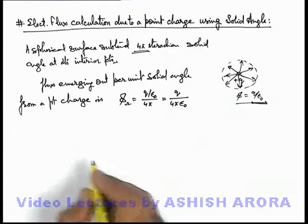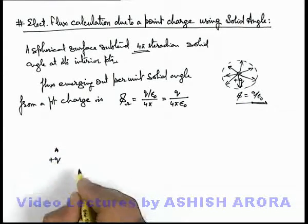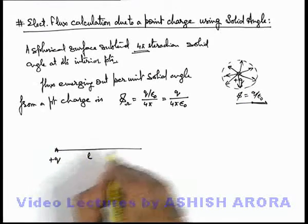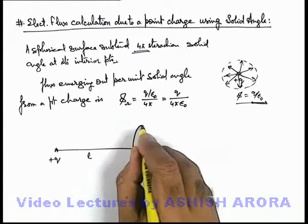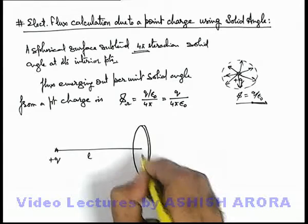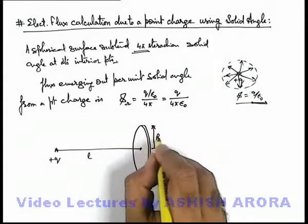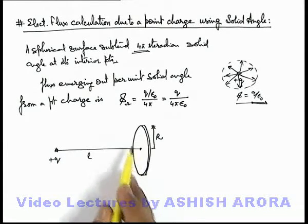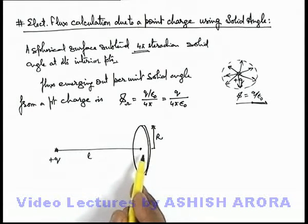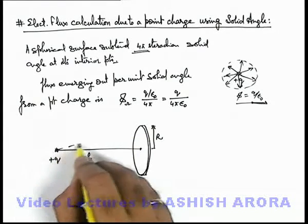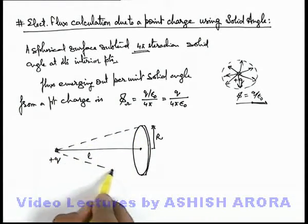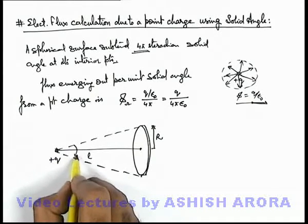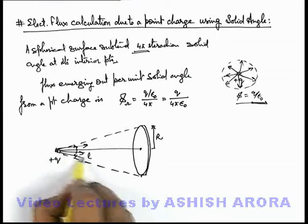Using this concept, if we are given a point charge plus q and at distance l we have placed a circular disc of radius r, we are required to find the flux passing through the disc from the overall flux originated from q. The whole electric flux of charge q originating within the conical region will pass through the disc.